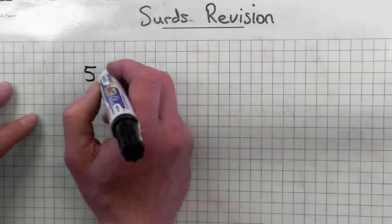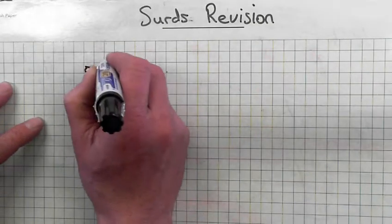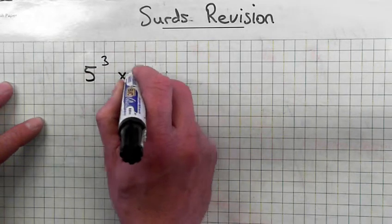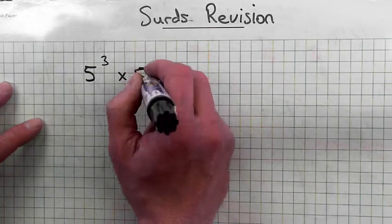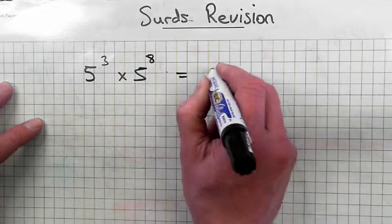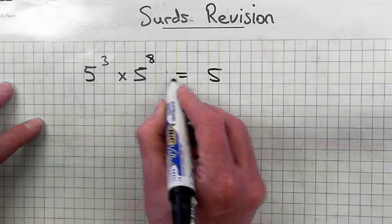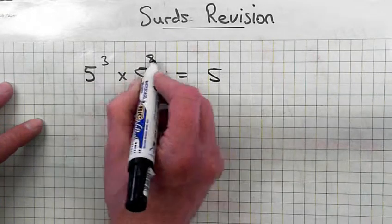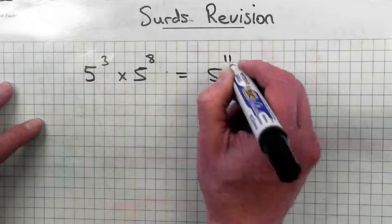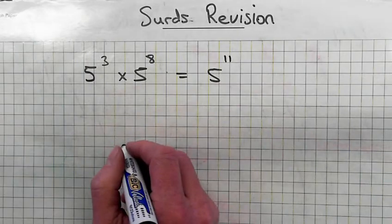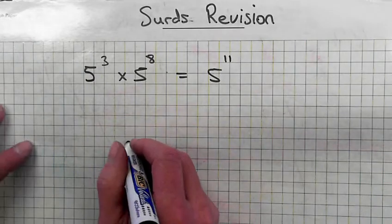Law number one: five to the power of three times five to the power of eight. Five is the base number. Add the powers — add eight and three, you get eleven. Five to the power of eleven.